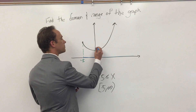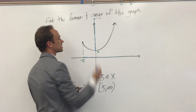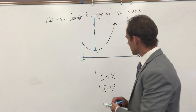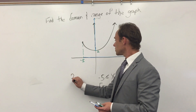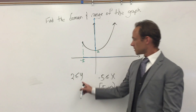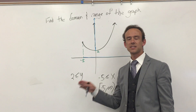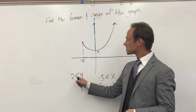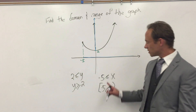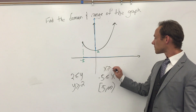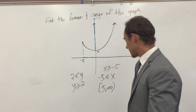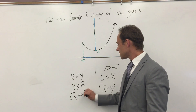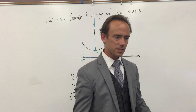Now the range. I'll highlight all the values along the y-axis where the graph exists. I have to start at 2 and go up forever. So the range is Y is greater than or equal to 2 — Y can actually be 2 right there, and it goes on to infinity, which it can never equal. In interval notation that's bracket 2 comma infinity parenthesis.